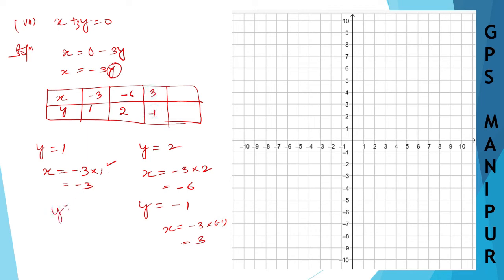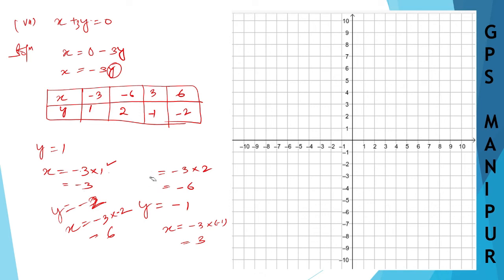When y is minus 2, x will be minus 3 into minus 2, which is plus 6. You can take any number — it depends on you. Any number you try, as long as your calculation is correct, you will get the right points.